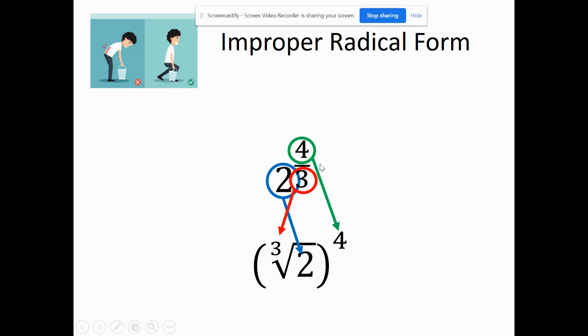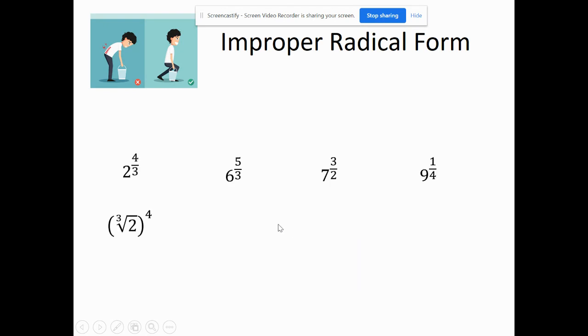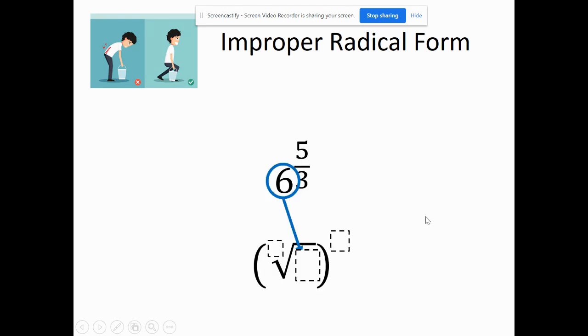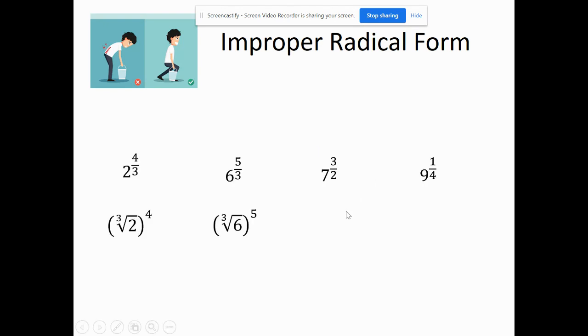That's where these numbers end up going. Now we have the second one. The six is going to be the base. The three is the root - it's a cube root. Once we get that answer, we're going to take it to the fifth power. That's where it would go and that's what it would look like.